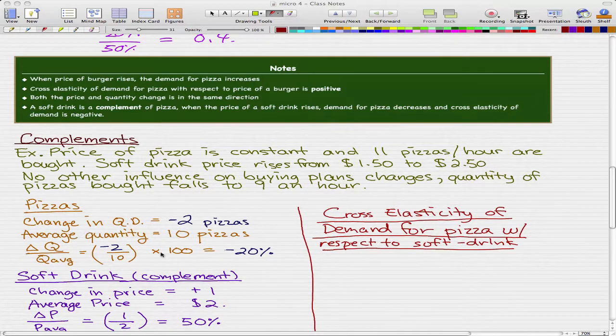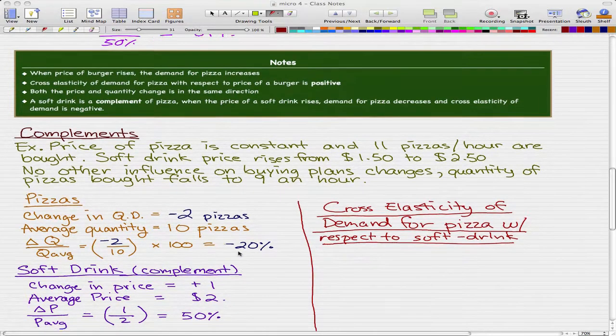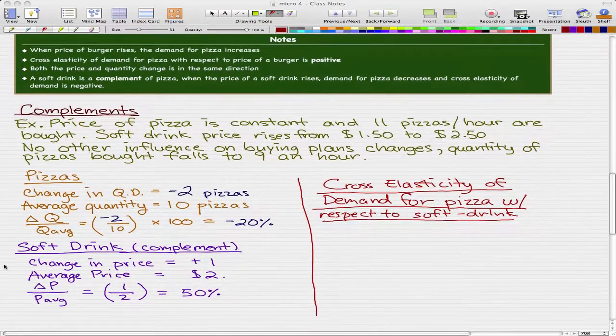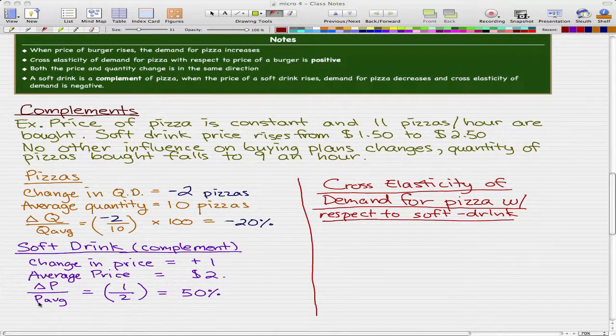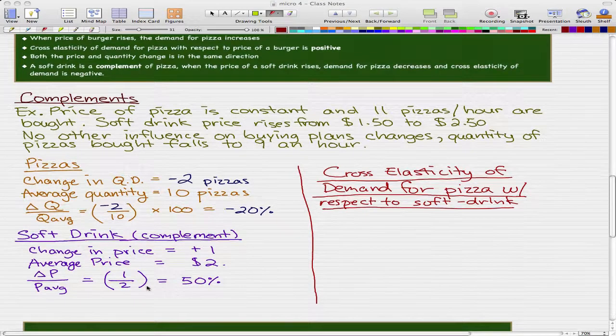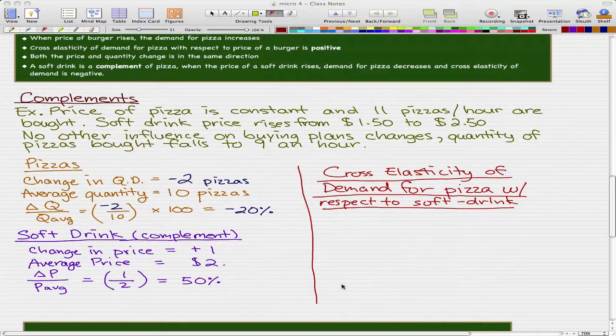That gives us 0.2. We times that by 100 and that will give us negative 20%. Now the soft drink is the exact same thing as the last video where the change in price was $1.50 to $2.50, that's $1.00. The average price is $2.00 where we take $1.50 plus $2.50 divided by 2.00. We take 1 divided by 2 and that will give us 50%.